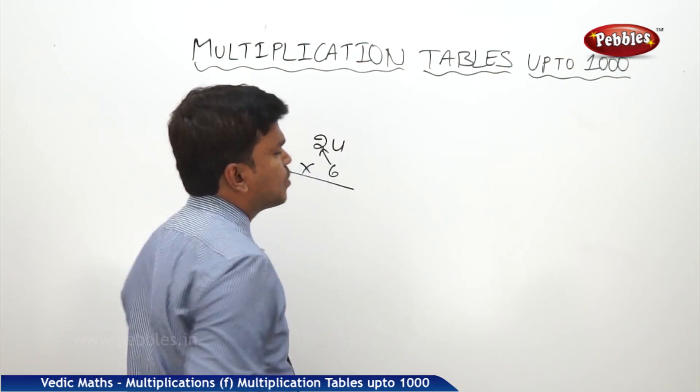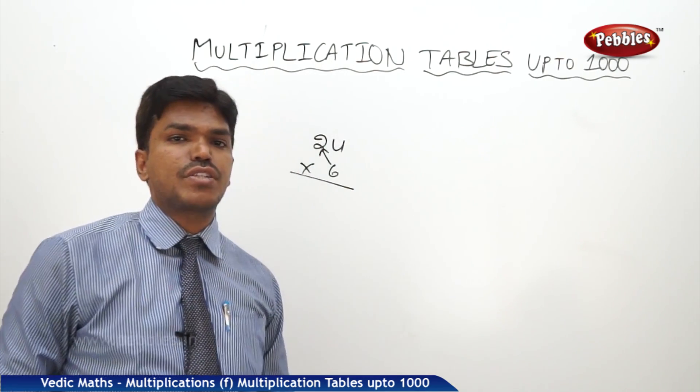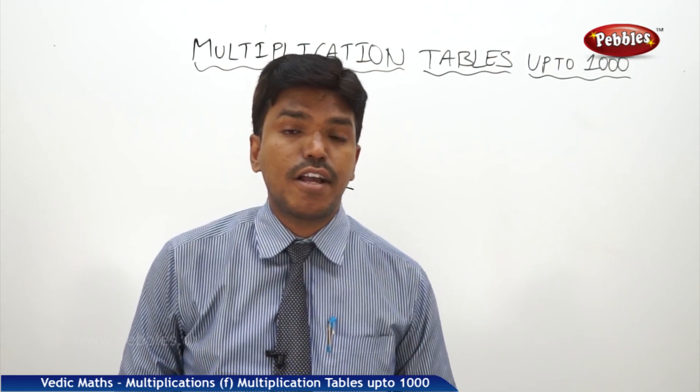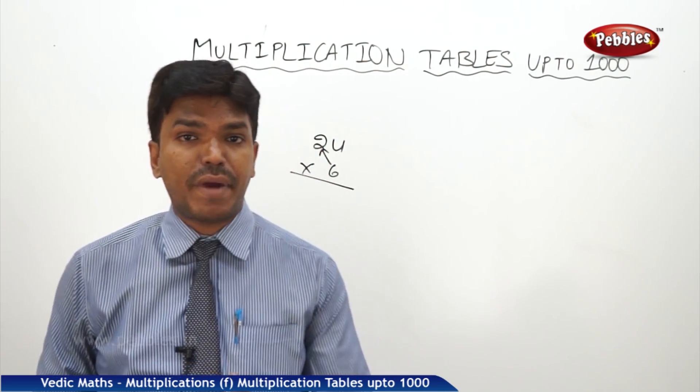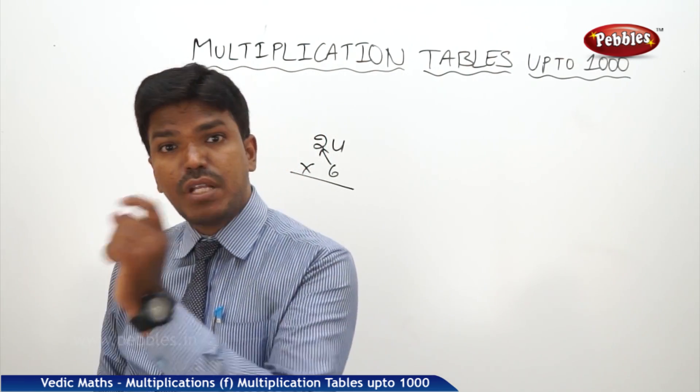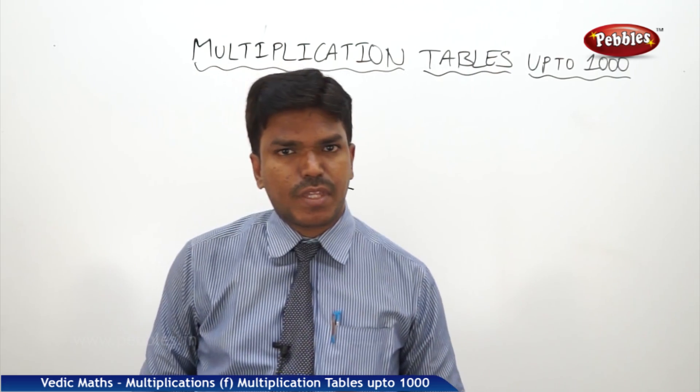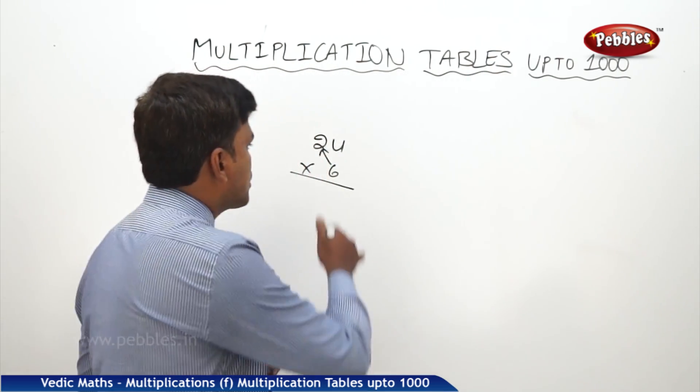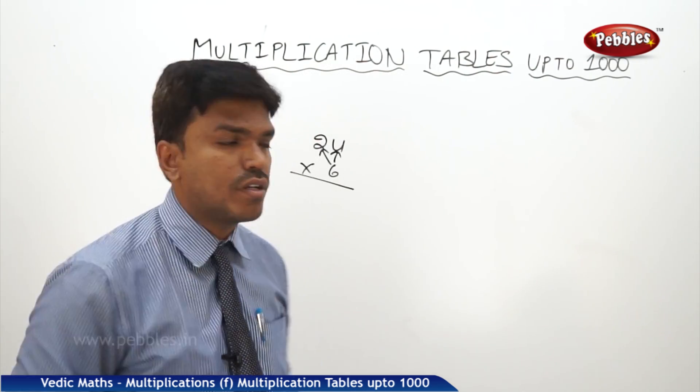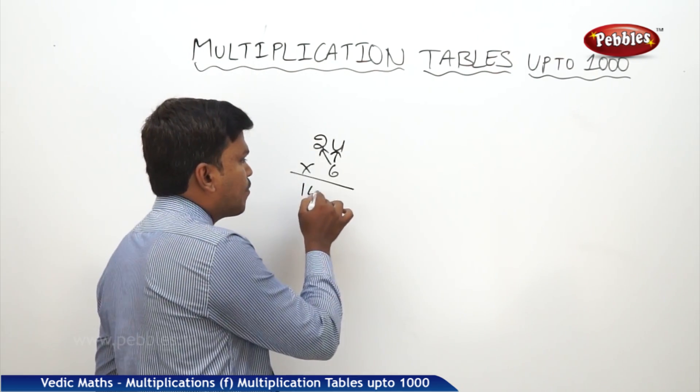What is 6 twos? 12, but don't take it as 12, take it as 120 and keep in the mind. 120 for some time. Now what is 6 fours? 24. 120 plus 24, how much? Exactly, it is 144.